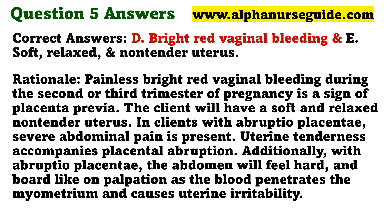Rationale: Painless bright red vaginal bleeding during the second or third trimester of pregnancy is a sign of placenta previa. The client will have a soft, relaxed, non-tender uterus. In clients with abruptio placentae, severe abdominal pain is present and uterine tenderness accompanies placental abruption. Additionally, with abruptio placentae, the abdomen will feel hard and board-like on palpation as the blood penetrates the myometrium and causes uterine irritability.